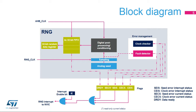The Data Ready Flag, or DRDY, is triggered as soon as the FIFO is full and is automatically reset when no more data can be read back from the RNG. In parallel, an error management block verifies the correct seed behavior and the frequency of the RNG source clock.